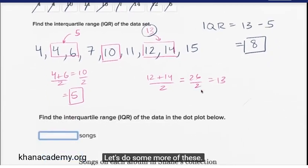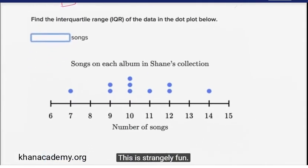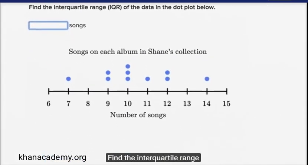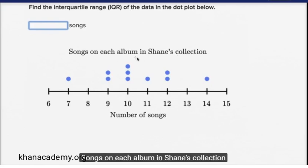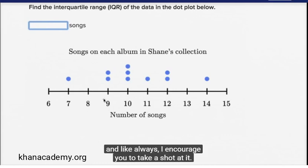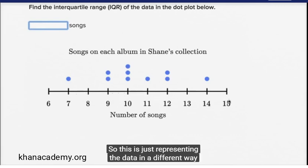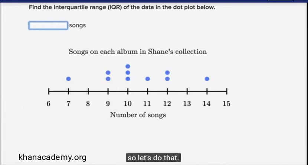Let's do some more of these. Find the interquartile range of the data in the dot plot below — songs on each album in Shane's collection. So let's see what's going on here. This is just representing the data in a different way, but we could write this again as an ordered list.